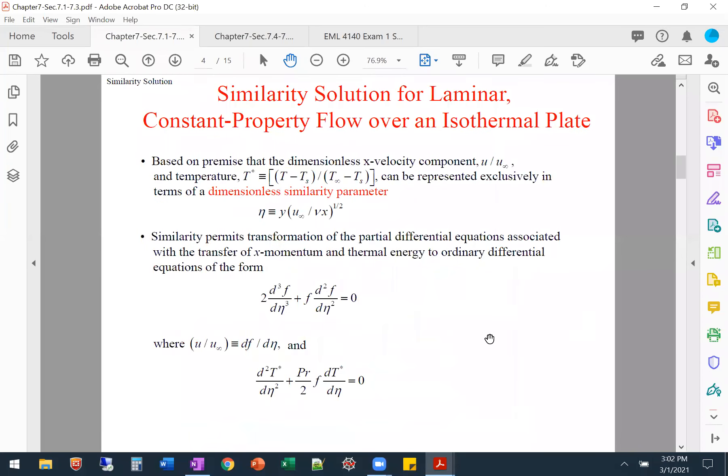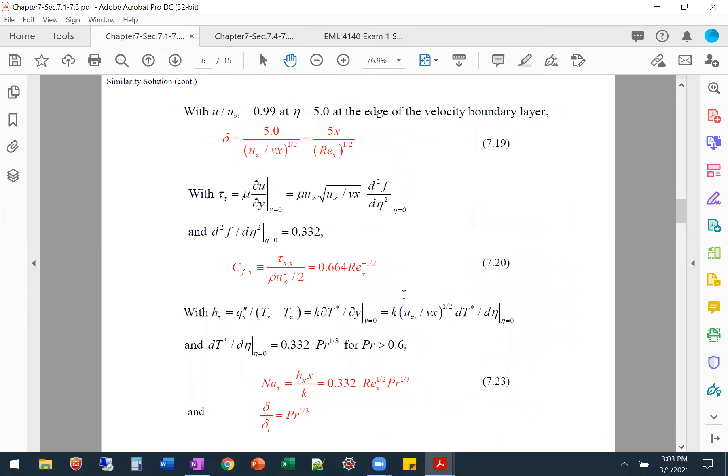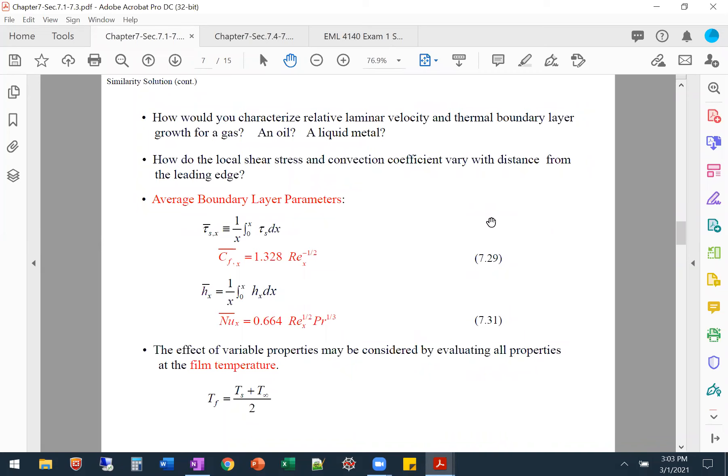We have the solution from the boundary layer equations for this laminar constant flow over an isothermal plate, where we solve it and get what that boundary layer profile looks like for the velocity and for the thermal boundary layer with different Prandtl numbers. From that profile, now we can get what we want out of it, which is what that boundary layer thickness is, what the friction factor is, what the Nusselt number is, and these are all local parameters. If we averaged them, we got the average parameters.